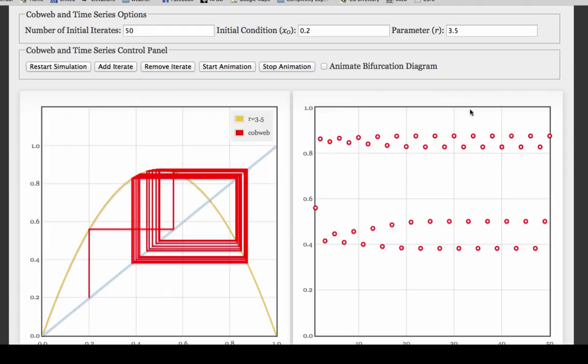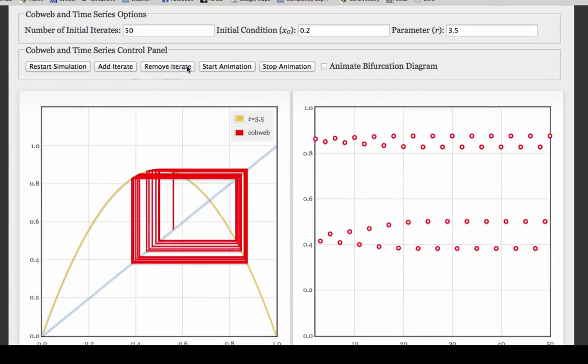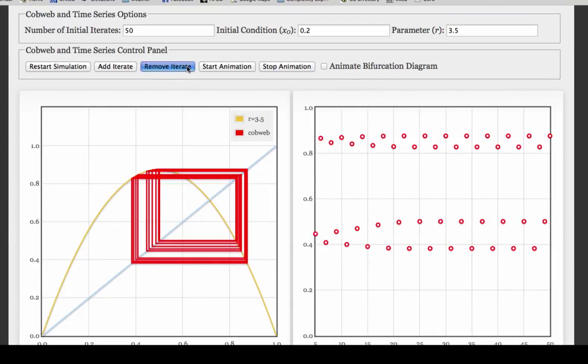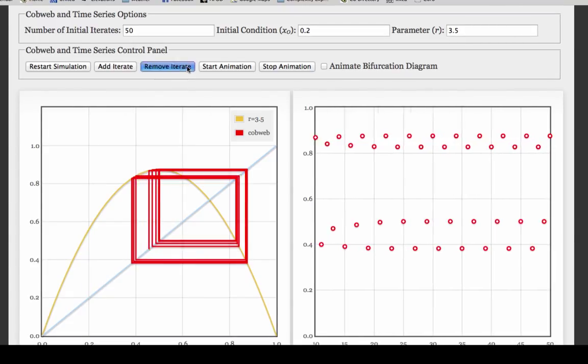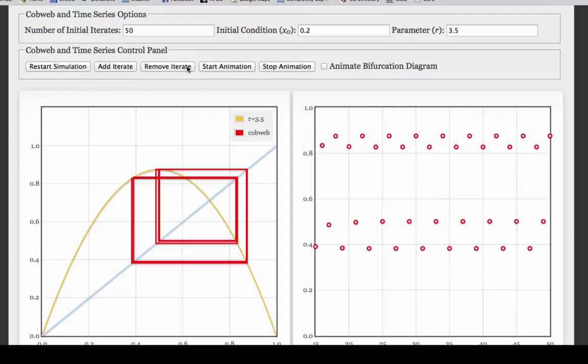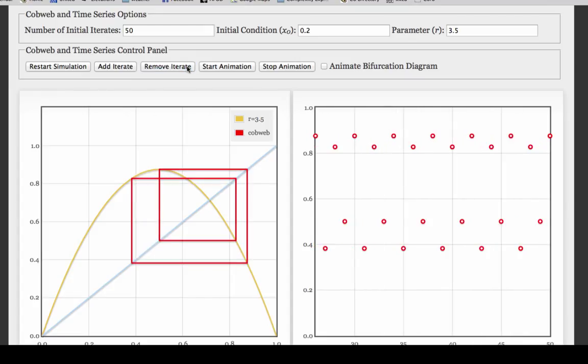Now this gets a little bit hard to see what the asymptotic behavior is, but you can use this Remove Iterate button right here to remove some of the iterates, starting from the beginning. So what I'm doing here is removing the transient. And if I remove enough of the transient off the front of the trajectory, all you see is the attractor, and you can see very clearly that it's a 4-cycle, and you can see very clearly from the left-hand plot what it is about the geometry of the yellow curve and the blue line that makes that happen.